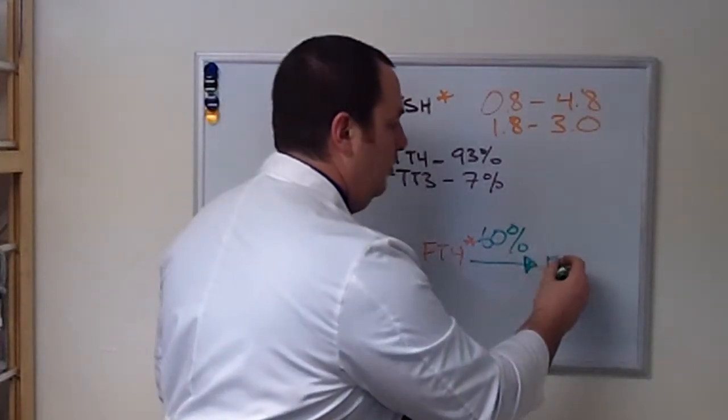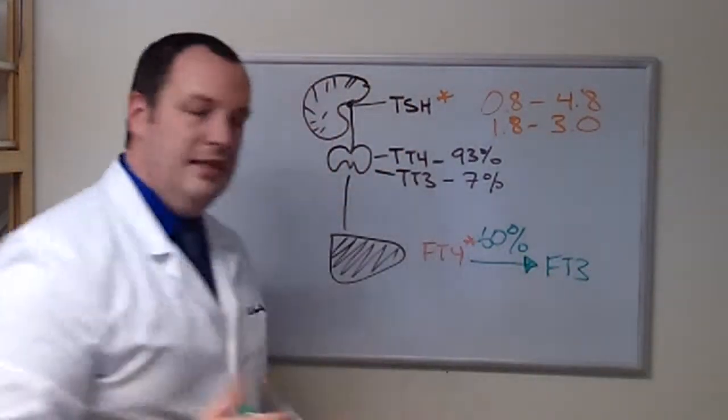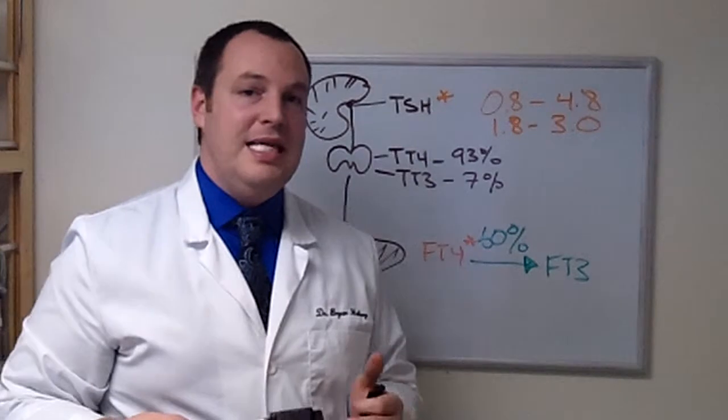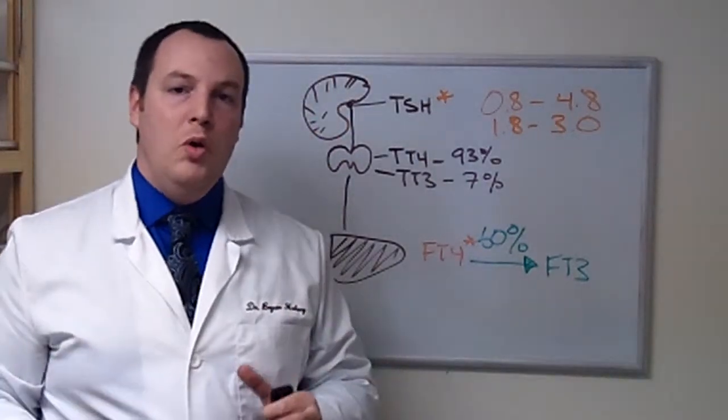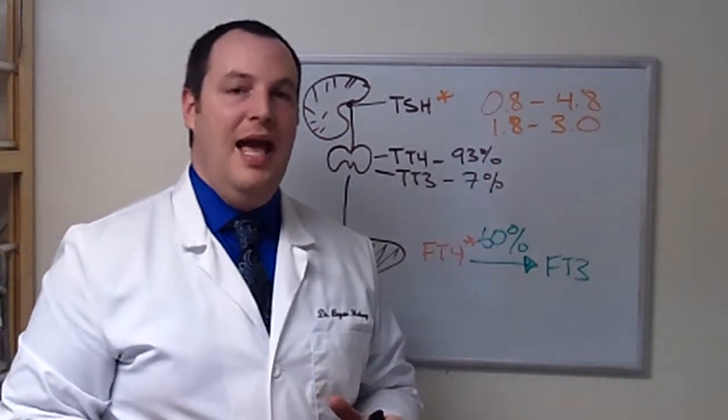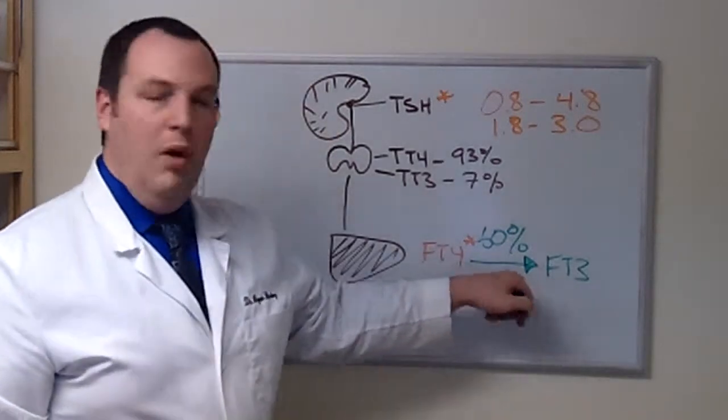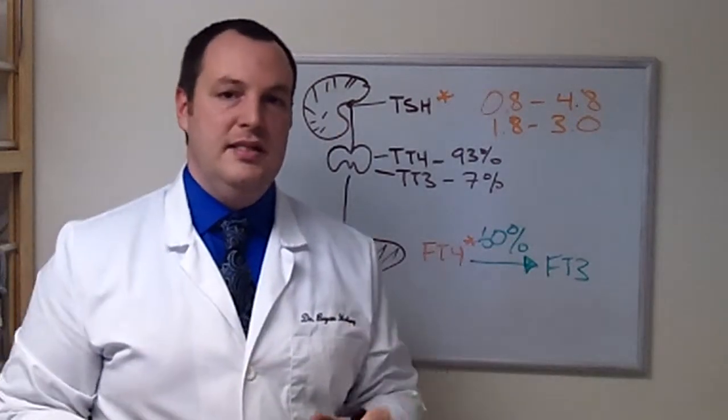So now we need to get to free T3. Free T3 is our most metabolically active thyroid hormone. This is the one that actually goes to the cells and tells the cells what to do.